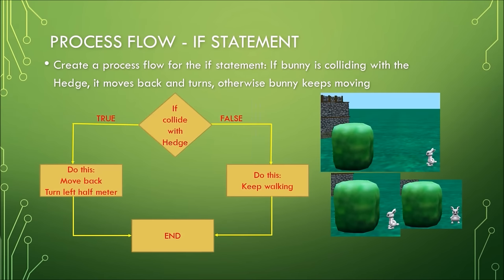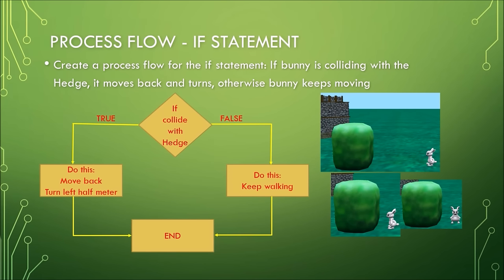Check your process flow with the answer. If the bunny is colliding with the hedge and this is true, the bunny will move back and turn half a meter left, and the program ends. If the bunny is not colliding with the hedge — meaning false — the bunny keeps walking and the program ends. Now you will practice using the if control structure in your Alice program.